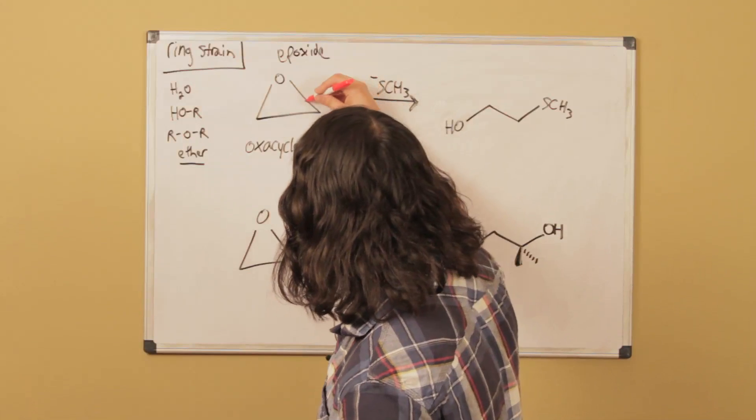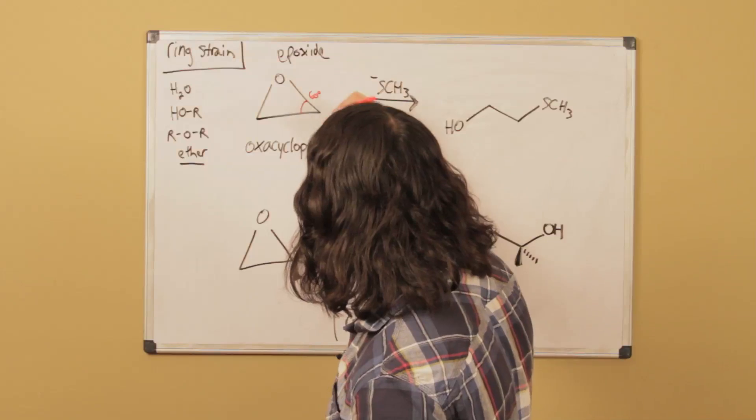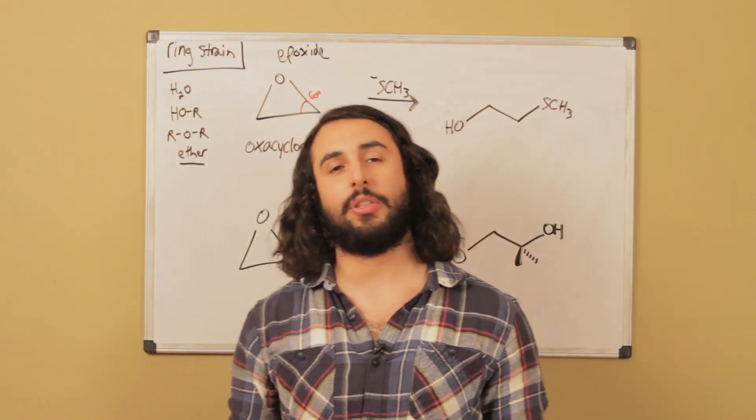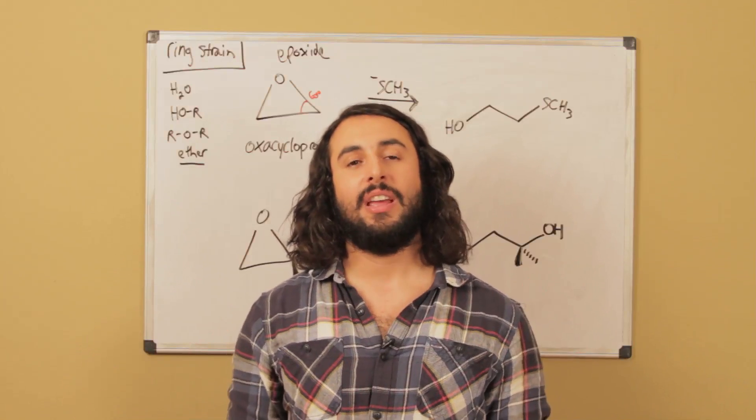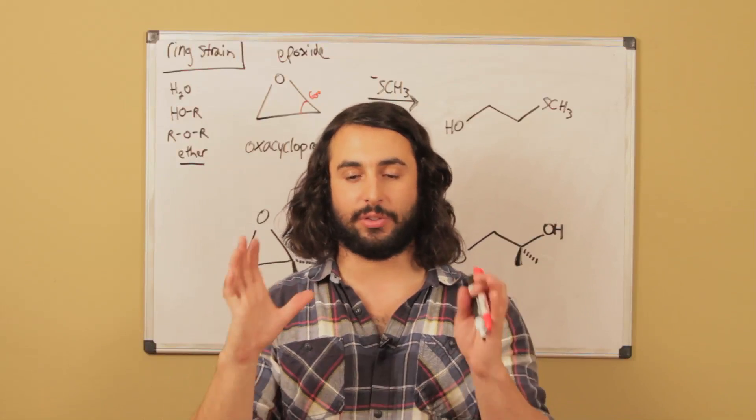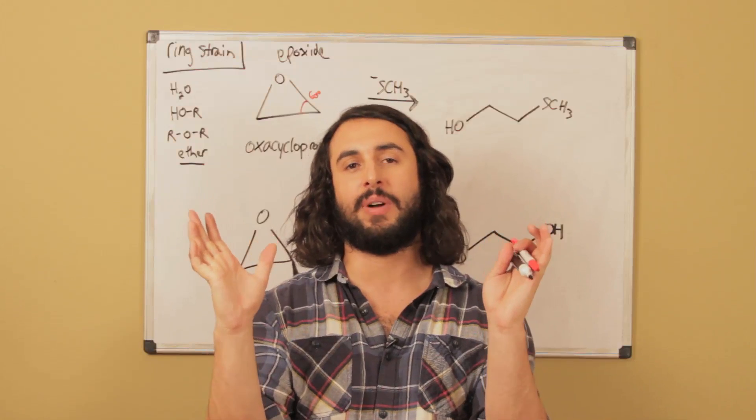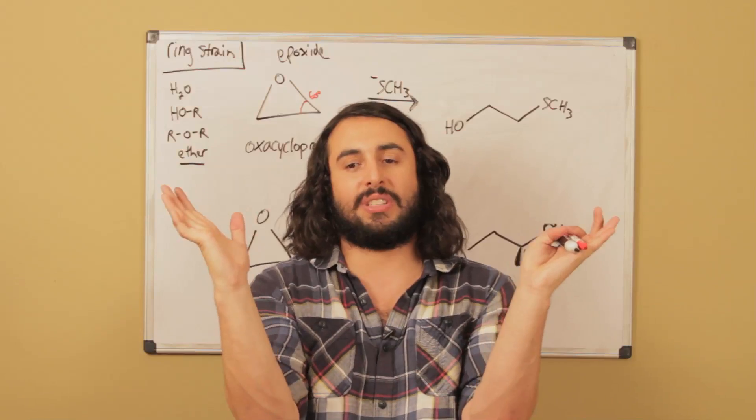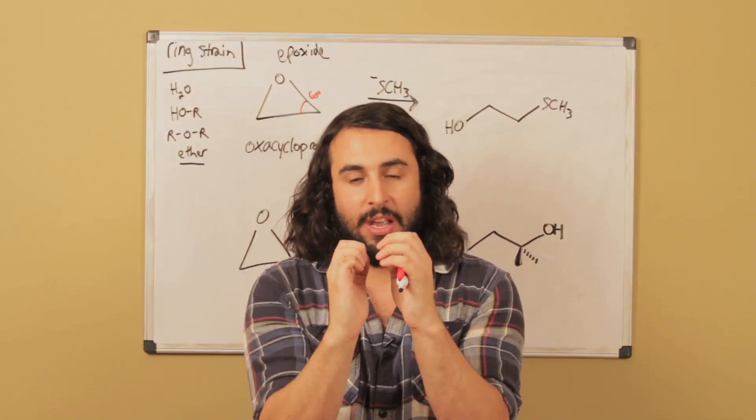The thing is that there's a lot of ring strain going on here. These are 60 degree angles but these are sp3 carbons. We know that sp3 carbons like to exhibit tetrahedral geometry, that's 109.5 degree bond angles. We're taking 109.5 degree bond angles and compressing that into 60 degree angles, so it's kind of like compressing a spring.